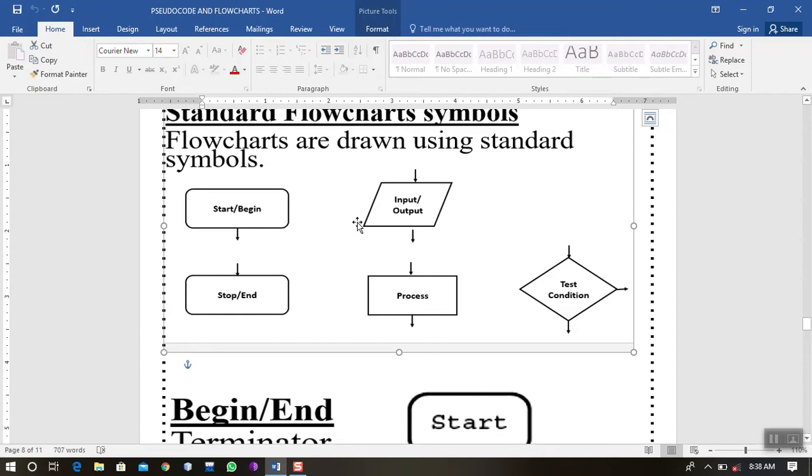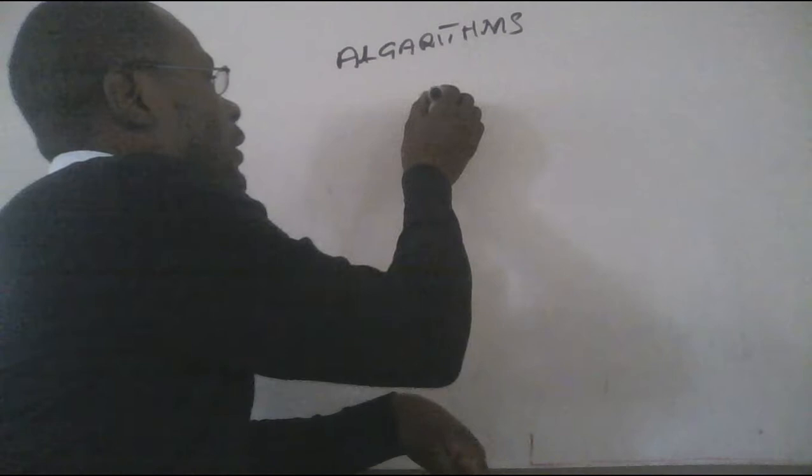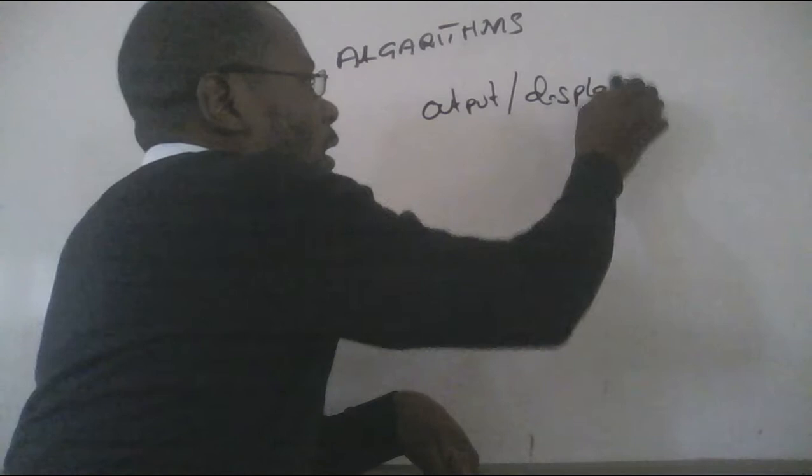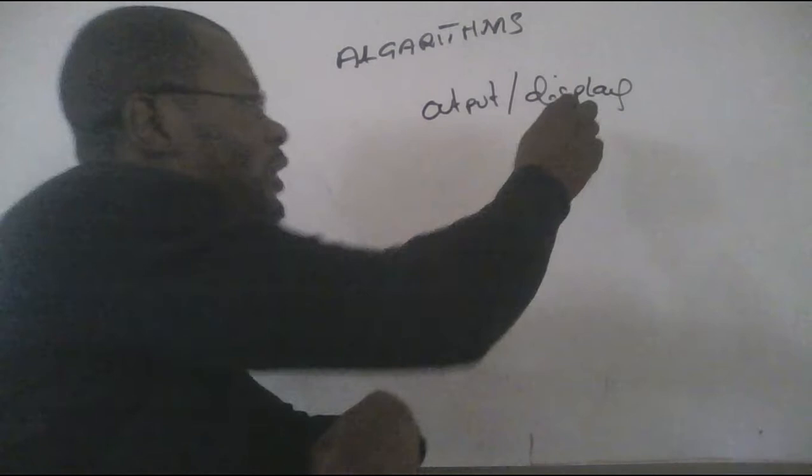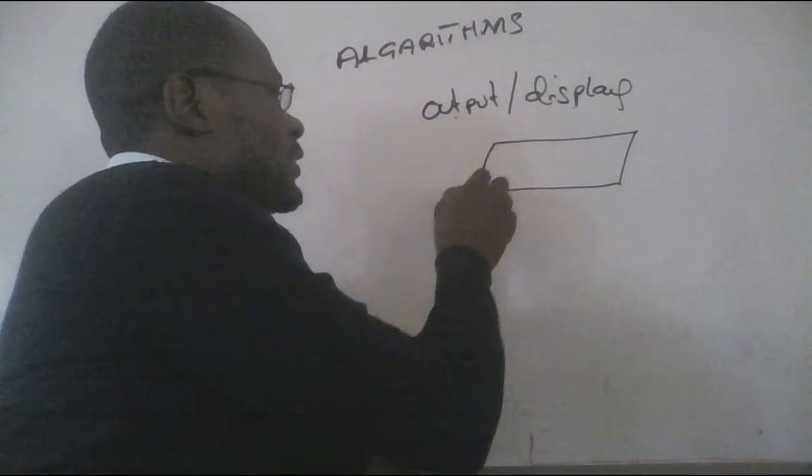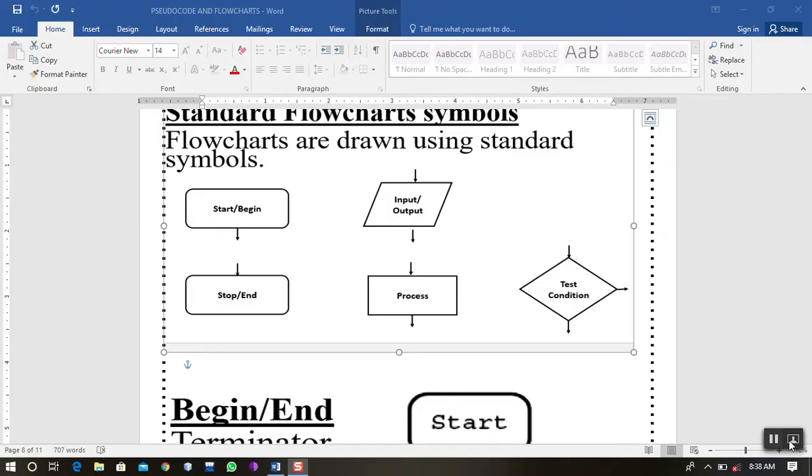For input-output, if you see the stage where a user is supposed to enter the input, we use the parallelogram symbol. And if you need to print something out of the computer or display something, we still use the same symbol. This is the type of symbol that is acceptable when designing a flowchart.